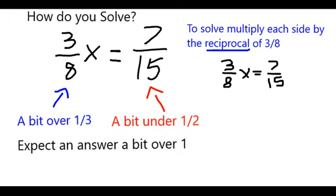You can find the solution to this by multiplying each side by the reciprocal of 3 eighths, which of course is going to be 8 thirds.